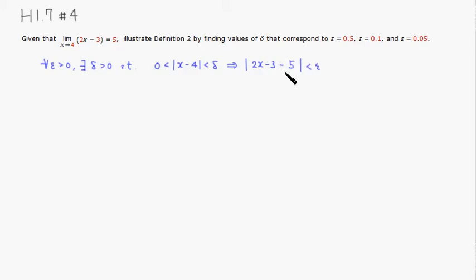Let's start with the conclusion we want to make so that we can find the formula for delta. So I'm going to have 2x, I'm going to go ahead and combine them, so it's going to be minus 8 is less than epsilon.